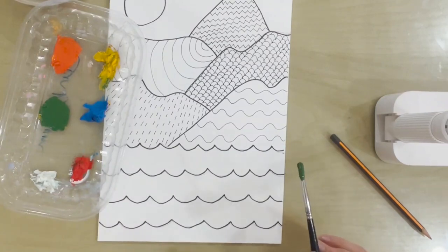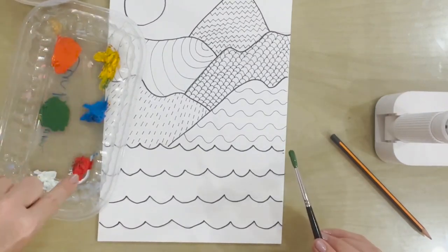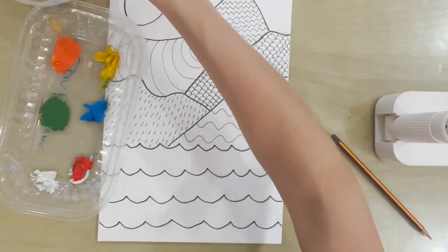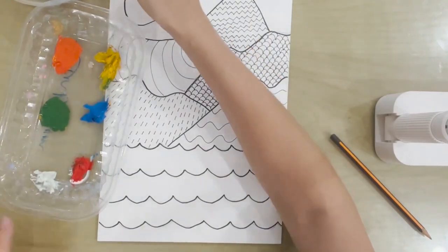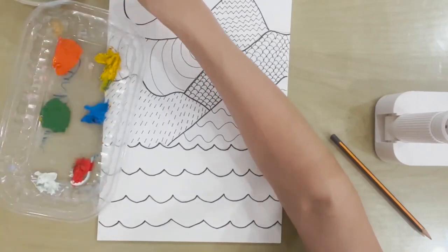So on my palette now, I have green, orange, yellow, blue, and red to use for my painting. I also have a white so I can mix lighter and darker versions of each of these colours.